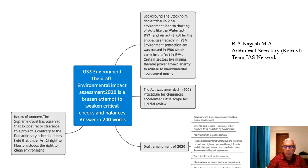General Studies Paper 3 carries 250 marks and consists of economy, agriculture, science technology, environment, internal security, and disaster management. Looking at the pattern of previous papers, the topic relating to environment gets around 50 to 60 marks or even more in a year. The question for discussion today is: 'The draft Environmental Impact Assessment 2020 is a brazen attempt to weaken critical checks and balances.' Answer in 200 words.